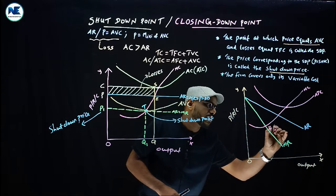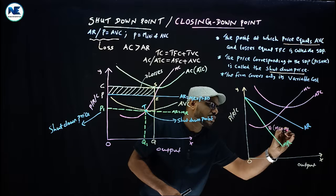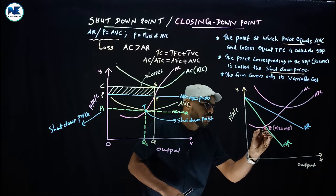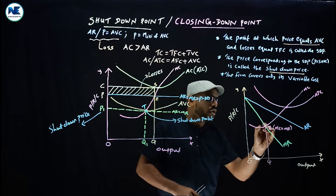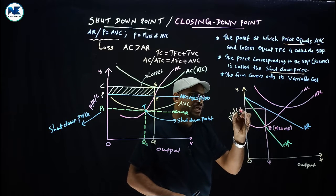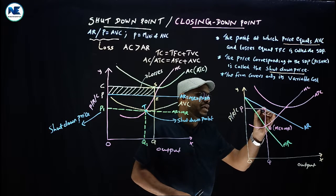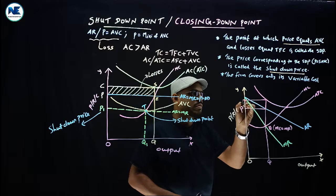This is point E, where MC equals MR. This is the equilibrium point. From this point, we get the equilibrium output, and then this is the price and the cost.